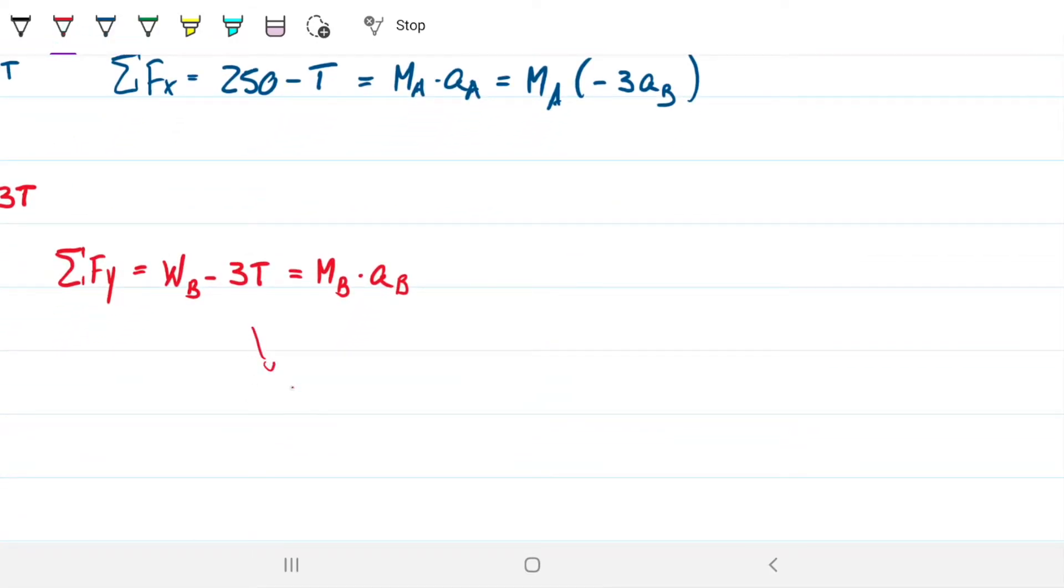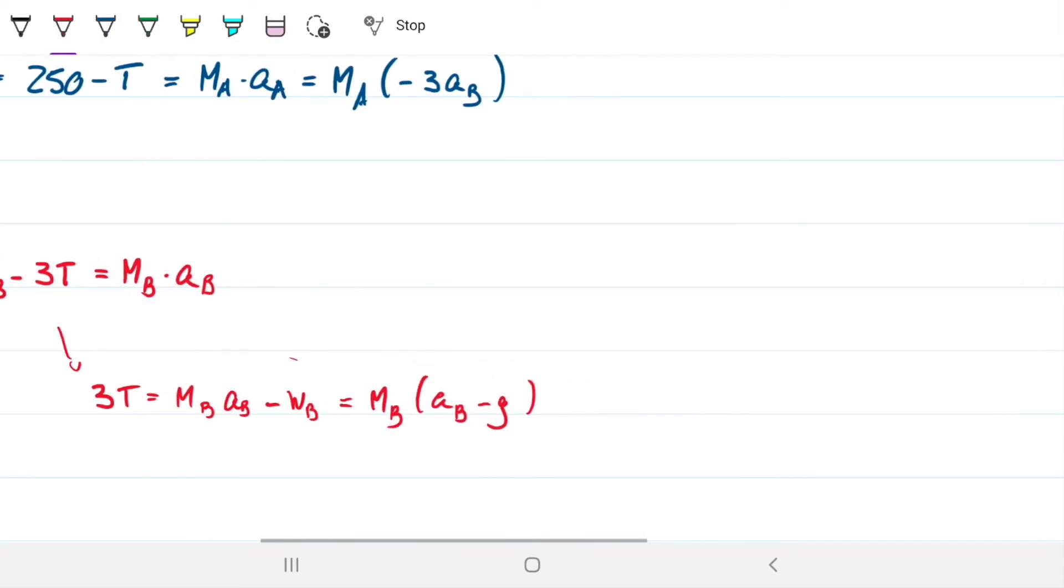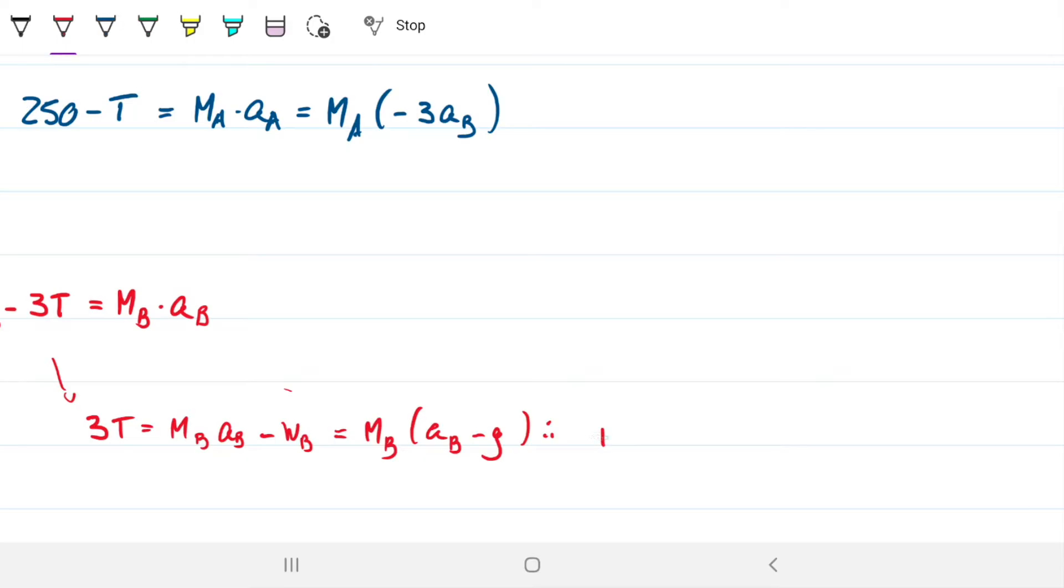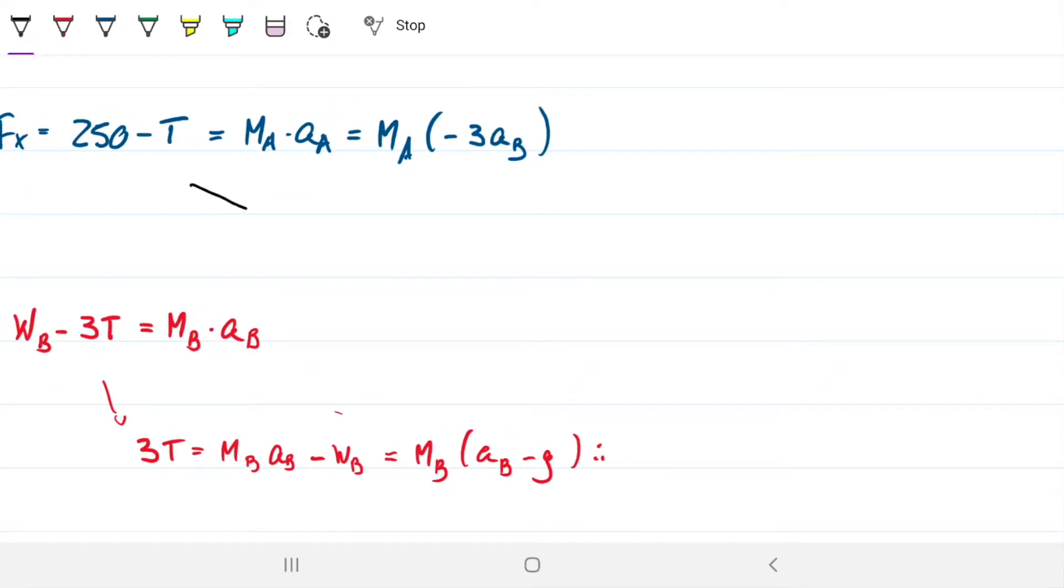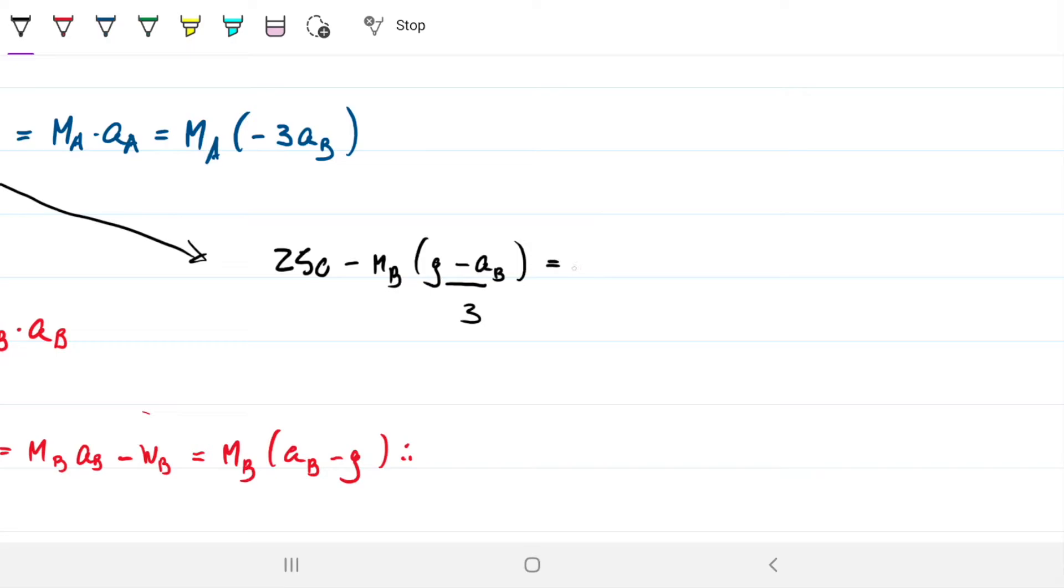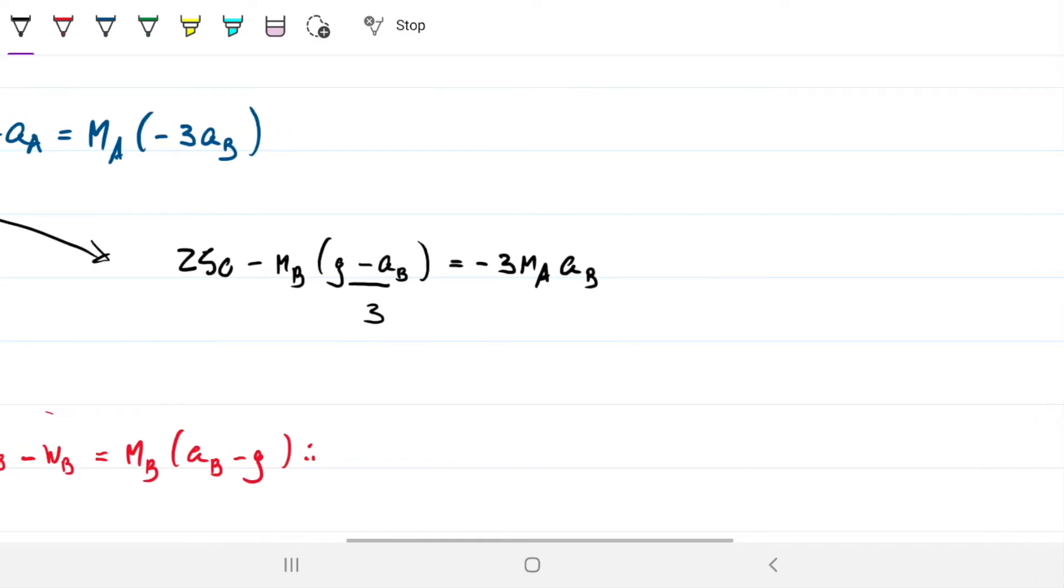Okay, so how can we solve this? Well, quite straightforward. We're going to substitute where we have the acceleration of a. The acceleration of a is going to be equal to minus three times the acceleration of b. So now we only have two equations and two unknowns. So this here gives me that three times the tension will be equal to mass of b times acceleration of b minus the weight of b. And then I can take the mass out. So the mass of b times the acceleration of b minus the acceleration of gravity. And I can substitute where I have three times the tension divided by three.